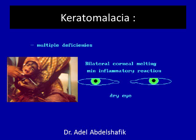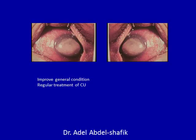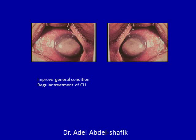A second type is keratomalacia. It appears in children with multiple deficiencies, poor nutrition, and bad general condition. It is a case of bilateral corneal melting with minimal inflammatory response — massive ulcers on both sides with necrosis and melting of the cornea. It is very difficult to treat; the approach is to improve the general condition and give the usual treatment for corneal ulcers.